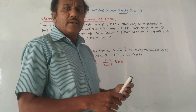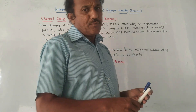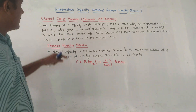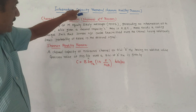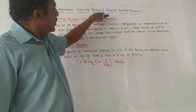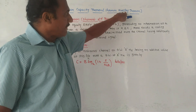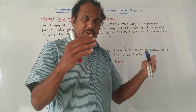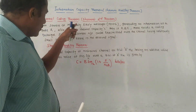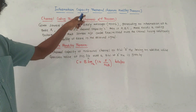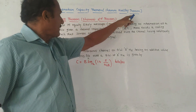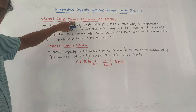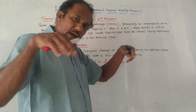Hello and welcome, dear students. This is the last topic of unit number five of the subject Digital Communication. Today's topic is the Information Capacity Theorem, which is also called the Shannon-Hartley theorem. From the exam point of view, we may expect a question like: state the channel coding theorem or state the information capacity theorem. First, we will discuss the channel coding theorem, which is also called Shannon's second theorem.